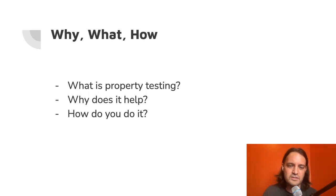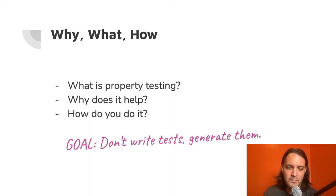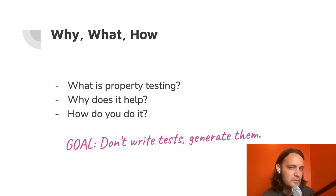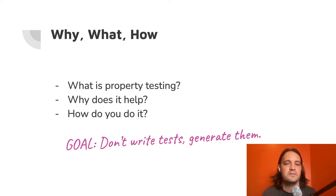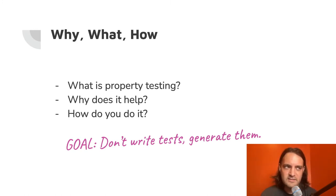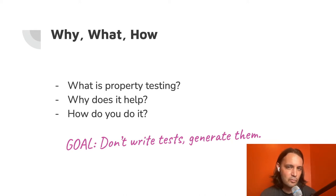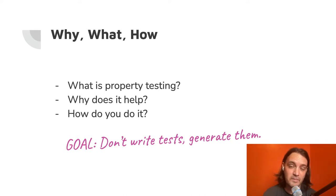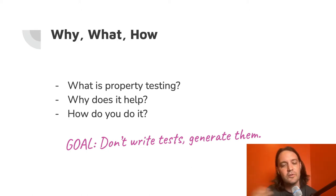In about 20 minutes, you should understand each of these three things. The goal that a lot of the functional programmers try to espouse — which I don't always agree with — is don't write tests, generate them. That was kind of the sales pitch for QuickCheck, where a lot of this stuff came from Haskell. But there's a lot of effectiveness in using regular unit tests you write by hand and integration tests and property tests together. I think it's valuable to do both.